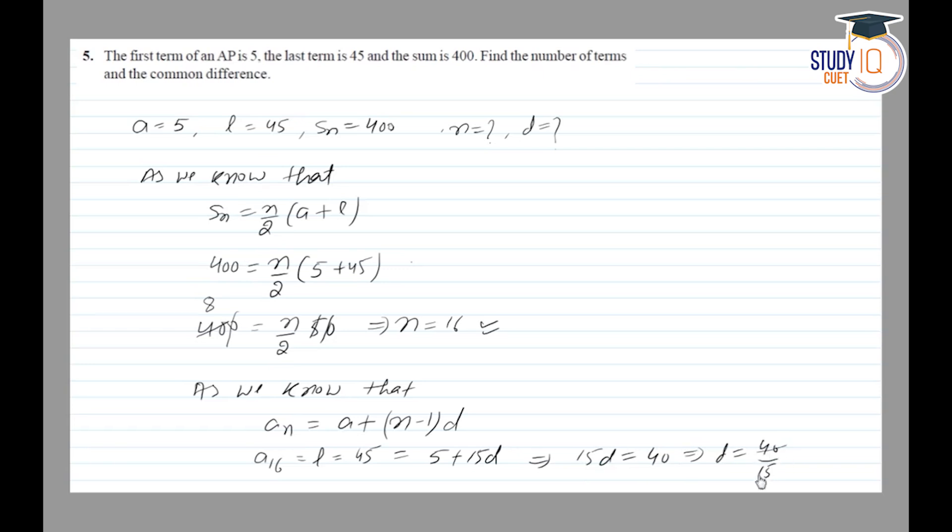Simplifying by dividing by 5, we get d = 8/3. So we have found both d and n values, which is what we needed to find.